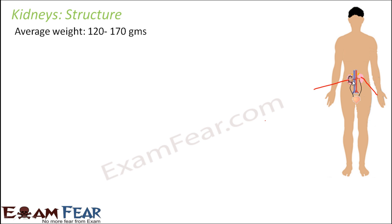The left kidney is higher because of the large size of the liver on the right side of the body. The liver is more inclined towards the right side, which is why the right kidney is slightly lower in position. The kidneys are soft tissues and are protected by the ribs, back muscles, and also have a protective layer around themselves.